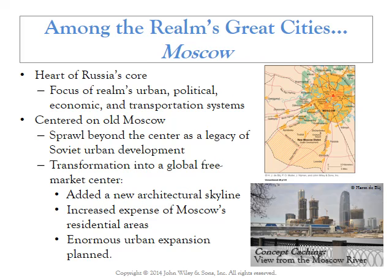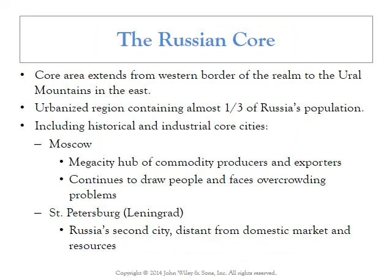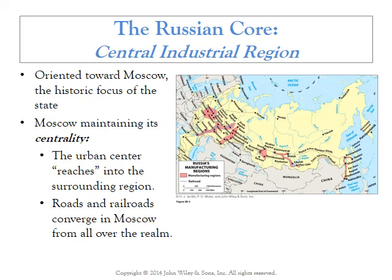Whereas parts of Russia are shrinking population-wise, Moscow is growing by leaps and bounds, with a lot of new construction and an entirely new Moscow district currently under development. In addition to Moscow, other metropolitan areas make up the Russian core, including St. Petersburg — named after Peter the Great, later known as Leningrad in the early 20th century. It's the second most populous city in Russia. Moscow is around 12 million; St. Petersburg is in the vicinity of 5 million. St. Petersburg is in the far northwestern part of the country and has an important open-water port, which helps with shipping.